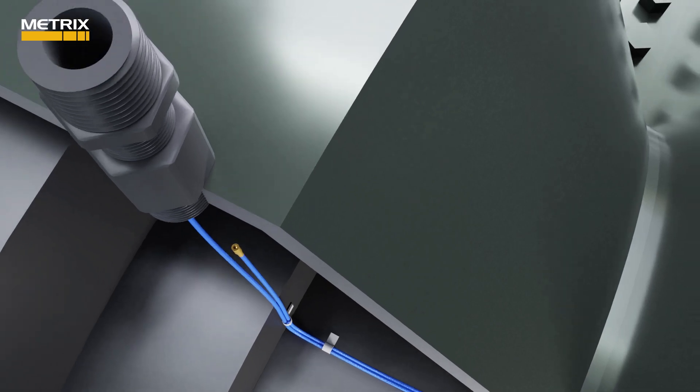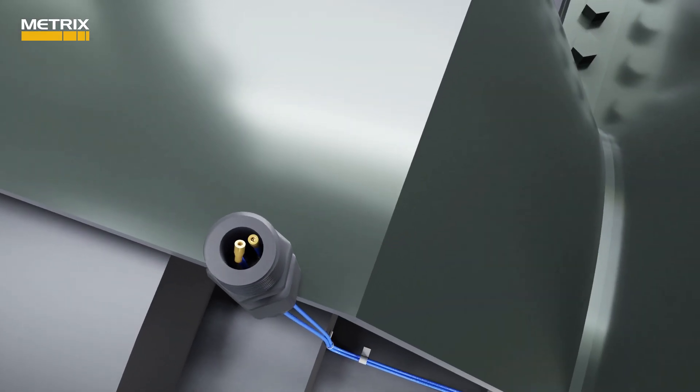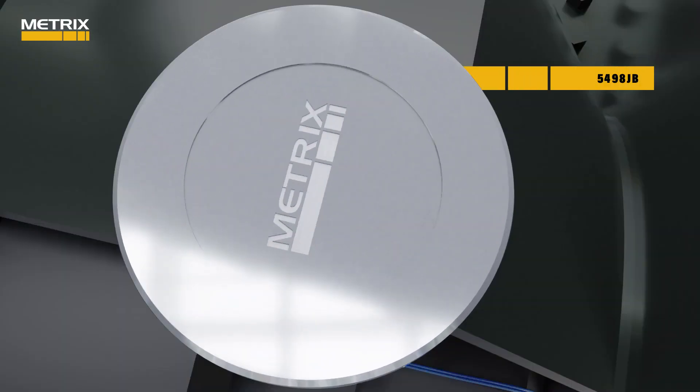The probe cables are then routed through our adjustable leak-tight 5494 LP low-pressure feed-through and into the 5498 JB junction box.